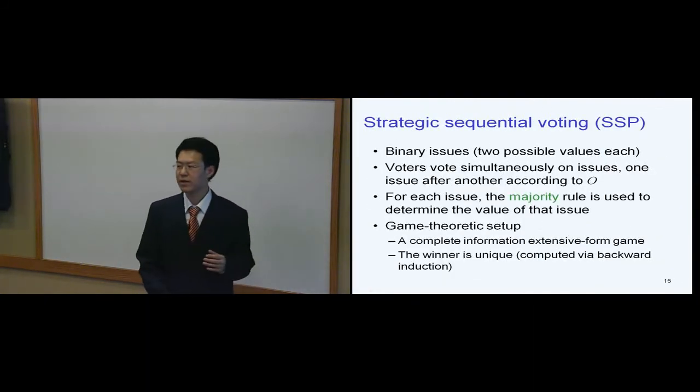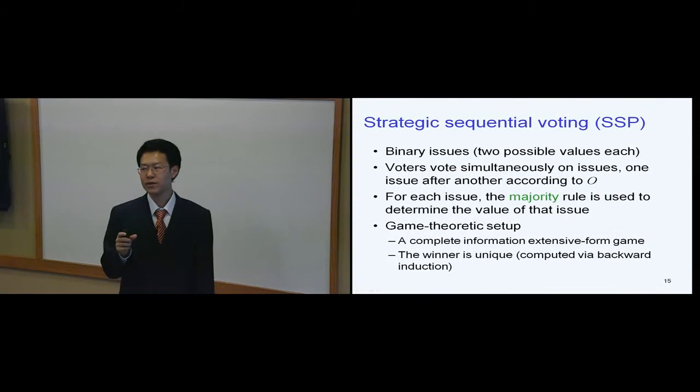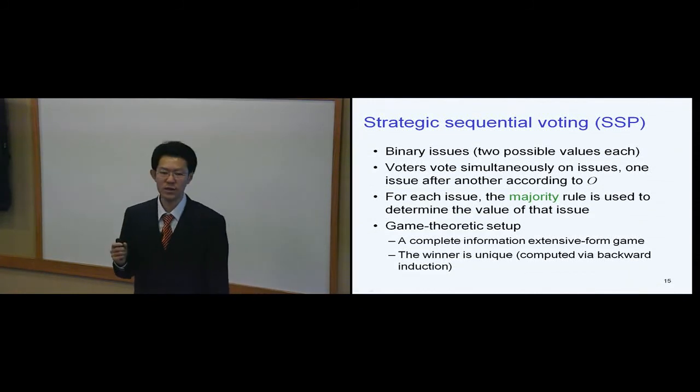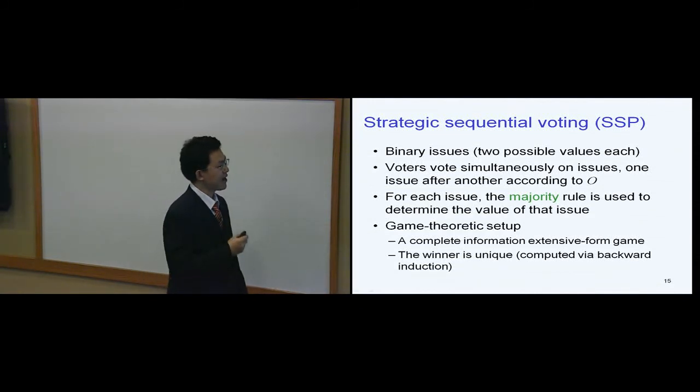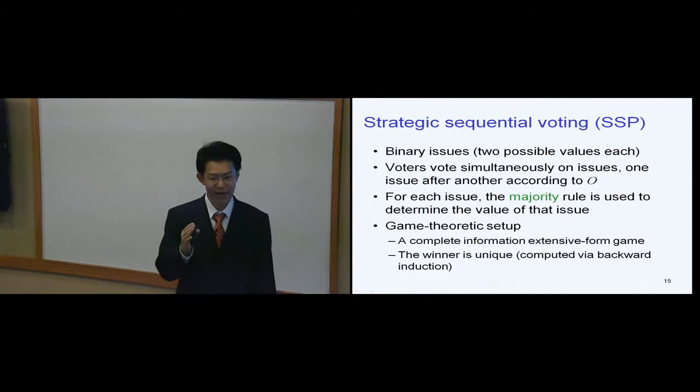Actually this works for arbitrary number of binary issues, and we assume that voters vote simultaneously over these issues, one issue after another, according to order O, which is given exogenously. For each issue, the majority voting rule is going to be used to select the winner, and this is actually a complete information extensive form game, and the winner is unique, which is computed by backward induction, as I showed you in the last example.